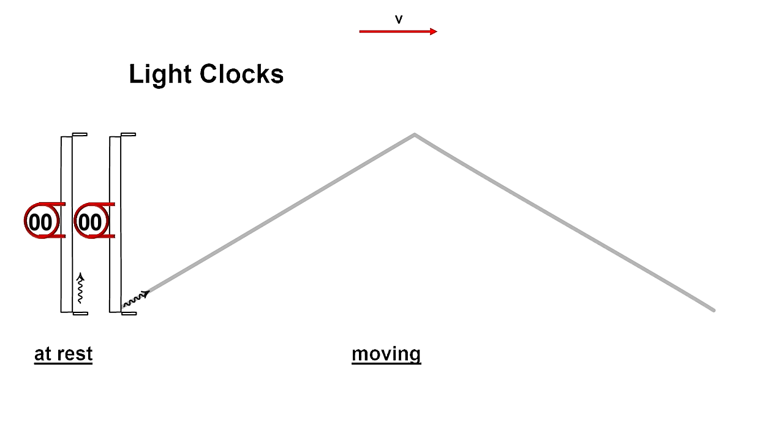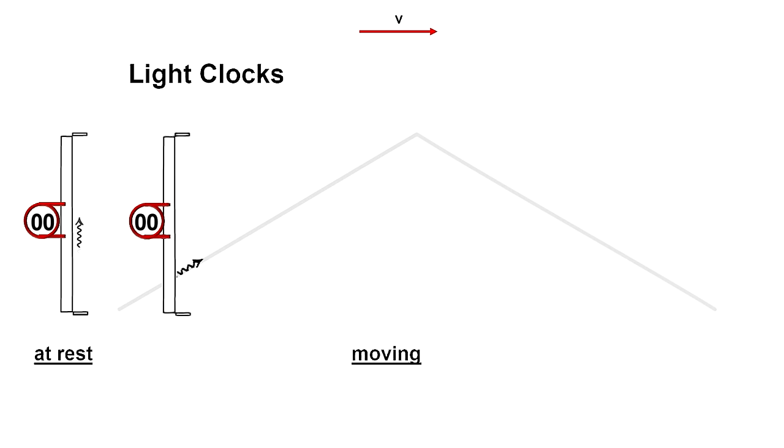Now, if we put the clock into motion with respect to a ground-based observer, we see that the light has to travel further. And because its speed is constant, it will take longer.